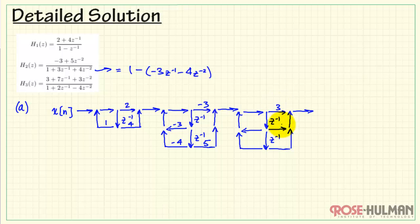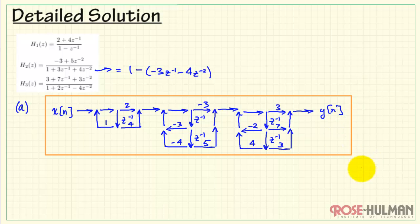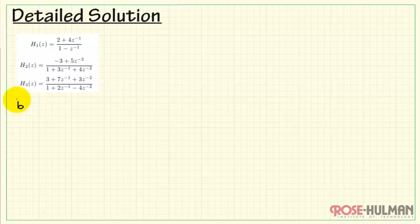Here you would have 3, 7, and 3 for the forward coefficients. We have unity minus 2 and positive 4. And this is our result for part a. In part b, we want to form the system function h and write it as a ratio of two polynomials. h is the product of h1, h2, and h3. Let me substitute in the specifics of each one of these.